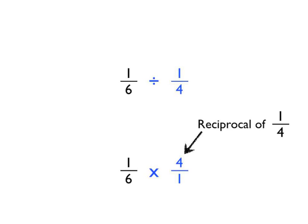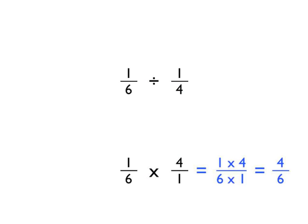So if we want to divide a fraction, what we can do is we can actually use the reciprocal of the second fraction and times by it. And then multiplying fractions is really straightforward, isn't it? Multiplying fractions we can do just by doing numerator times numerator, 1 times 4 in this case. Denominator times denominator, 6 times 1. And we end up with 4 sixths. Now, because both of those sums were equivalent, because dividing by a quarter or timesing by 4 over 1 was the same thing, we know that the answer to the original question, the division sum, a sixth divided by a quarter, must be the same as well. It must be equal to 4 sixths.